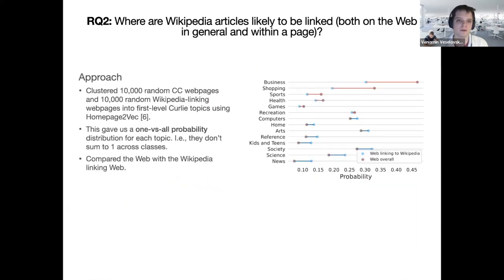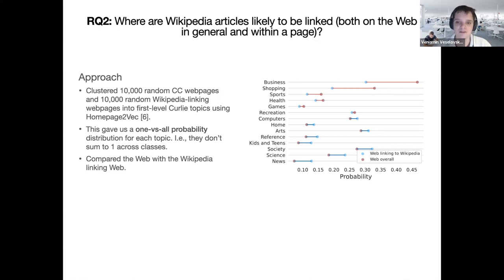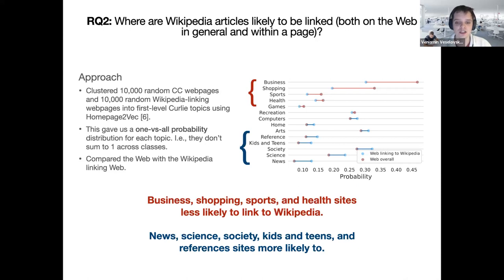Moving to research question two — where Wikipedia articles are linked — we take 10,000 random web pages on Common Crawl and 10,000 random web pages that link to Wikipedia, and we use homepage2vec to predict the first-layer curly topic for each web page. This gives us a one-versus-all probability distribution for each topic. What we find is that business, shopping, sports, and health sites are less likely to link to Wikipedia, whereas news, science, society, kids and teens, and reference sites are more likely to.